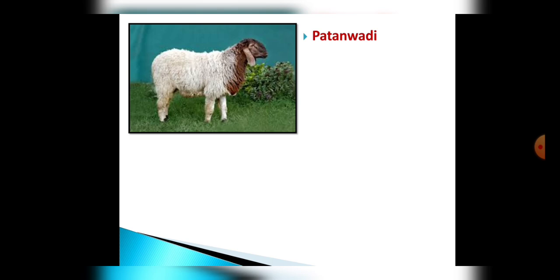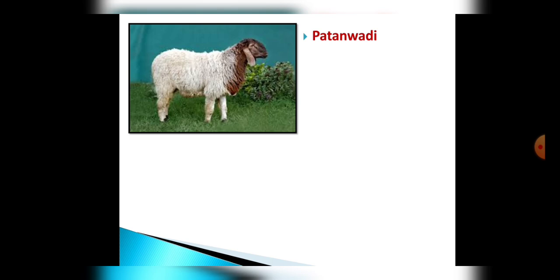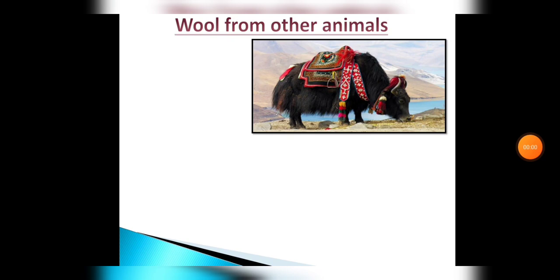The next is the Patanwadi breed, whose wool is used to make hosiery clothes, and it is found in Gujarat. So this was all about the sheep of India which give us different varieties of wool fabrics.